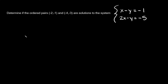What's up you freaking geniuses? In this video I'm going to teach you how to determine if an ordered pair is a solution to a system. So here is our example. This one says determine if the ordered pairs negative 2 comma negative 1 and negative 4 comma negative 3 are solutions to the system.